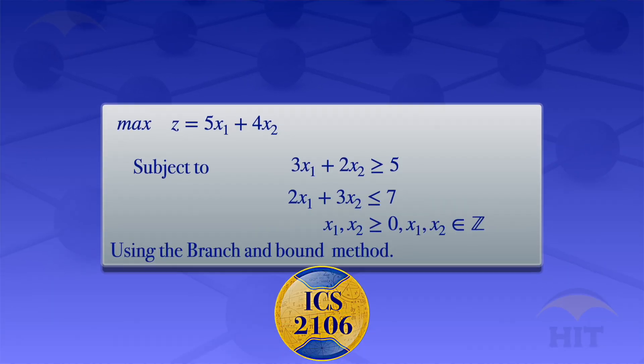In this tutorial we are going to use the branch and bound method to solve the integer programming problem. Maximize z equals 5x1 plus 4x2, subject to 3x1 plus 2x2 greater than or equals to 5, 2x1 plus 3x2 less than or equals to 7, x1 and x2 greater than or equals to 0 and integer.